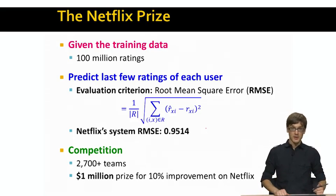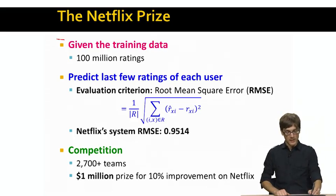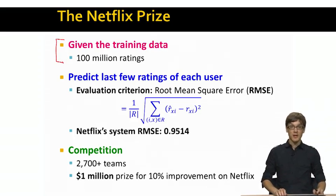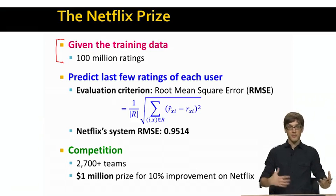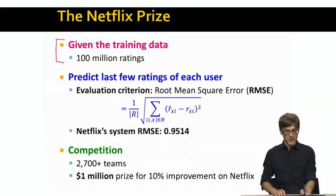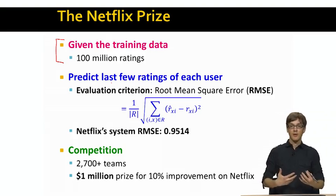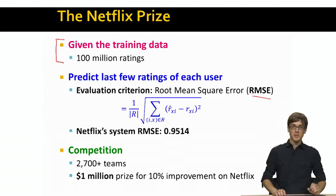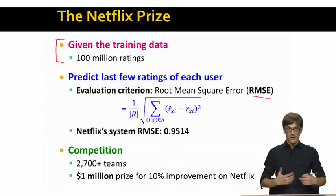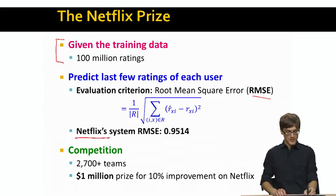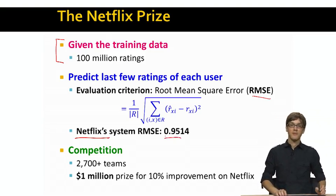So what Netflix gives us is the training data of 100 million ratings: about half a million people, 20,000 movies, and ratings. Our goal is to predict a few ratings for every user, where the evaluation criterion is the root mean squared error. We also know that the root mean squared error of the Netflix in-house system at that point in time was 0.95.